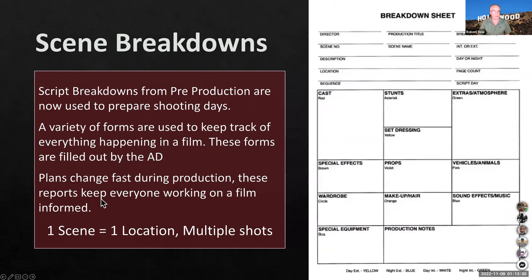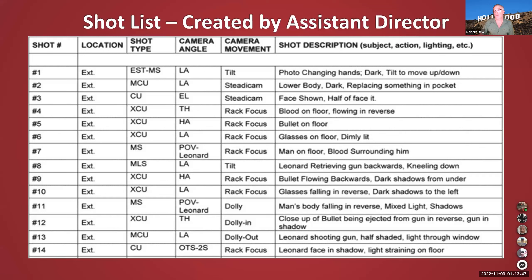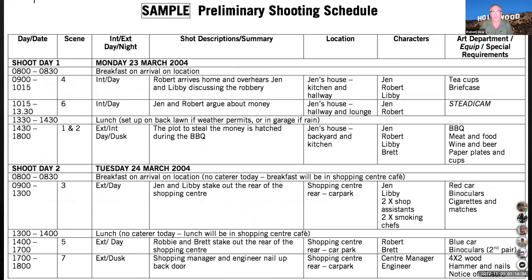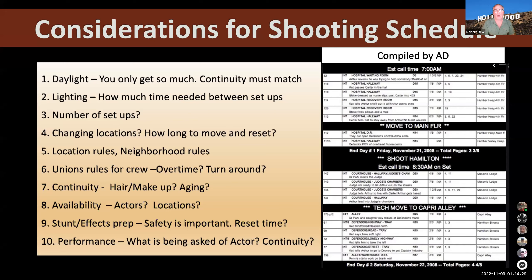Scene breakdowns: one scene, one location, multiple shots. Script breakouts from pre-production are now used to prepare for shooting day, creating shot lists. A breakout sheet contains all details for the production. A shot list, created by the assistant director, lists all exterior or interior shots — closeups, medium shots — telling everyone what's going on. Here's a preliminary shooting schedule: breakfast early morning, then the first shot, which might be scene four shooting out of order, interior day. The goal is to accomplish certain shots before lunch. The shooting schedule is made by the AD consulting with the director and producer.